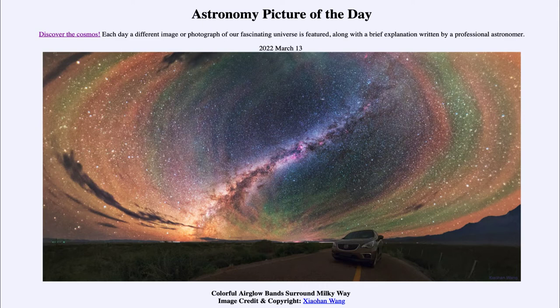It's a similar process to the aurora, except the aurora is caused by particles and not by light. Air glow is caused by light, which means air glow can be visible anywhere on Earth, and it may be more intense and more easily visible when there are storms or other disturbances within the atmosphere.